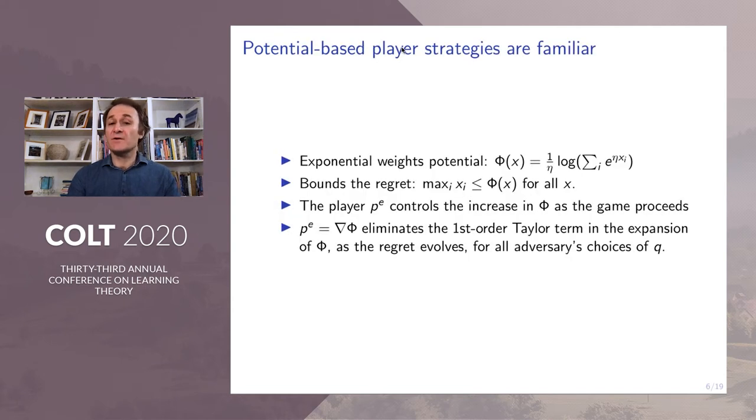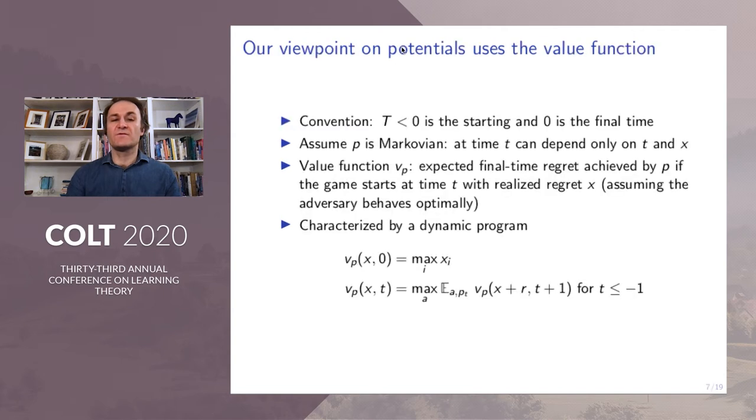Potential-based player strategies are familiar. For example, exponential weights potential bounds the regret above. The player controls the increase in the potential phi as the game proceeds. Specifically, choosing the player's strategy to be the gradient of phi eliminates the first-order Taylor term in the expansion of phi as the regret evolves for all adversaries' choices of q.